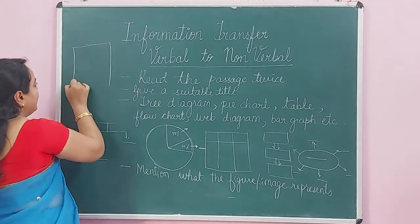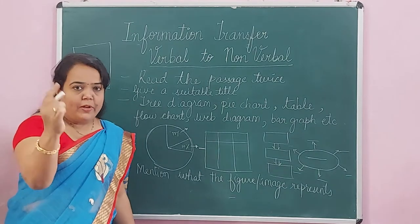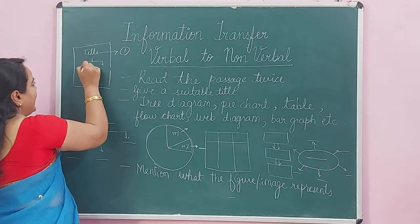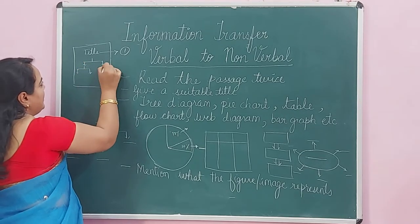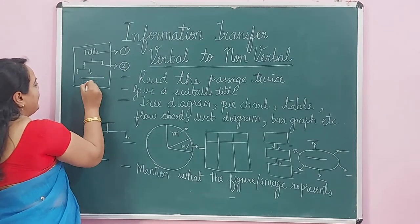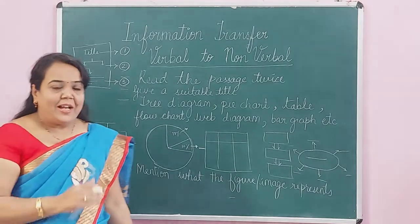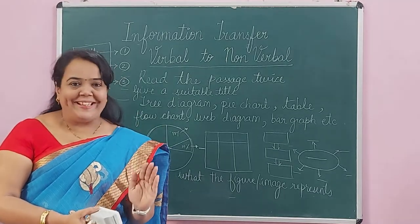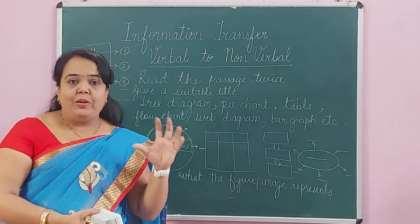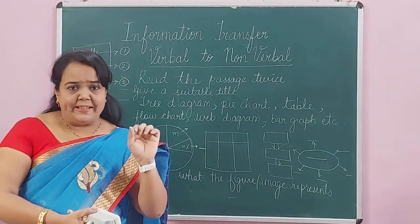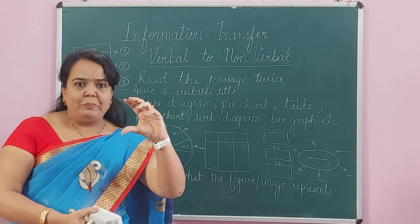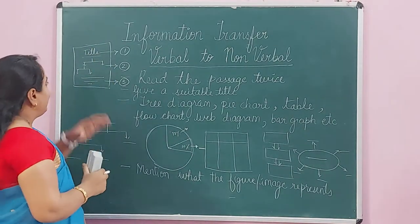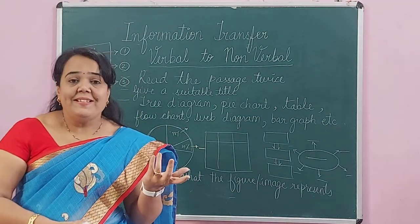You should solve this question in three steps. First step: write the title and underline it. Second step: draw the diagram. Third step: write information about the diagram — what it is and what it represents. Always solve this question on a fresh page. Use a scale and ruler, draw it systematically, keep your handwriting legible, and use the complete page — don't draw a small diagram.